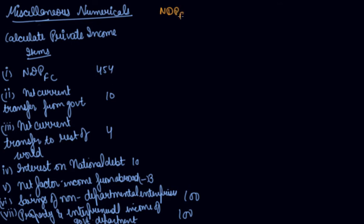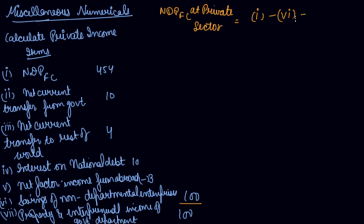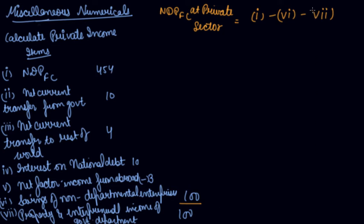You are given NDP at FC and the other items. You have to first calculate the NDP at FC from the private sector — that is, what you get from the private sector. The formula is: NDP at FC minus savings of non-departmental organizations (that is 6) minus income from property and entrepreneurship of government departmental enterprises (that is 7). So from 454, subtract 100, then subtract 100, and you get 254 as your net domestic product at factor cost from the private sector.